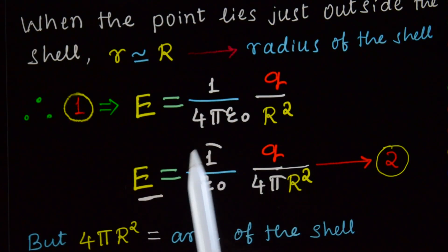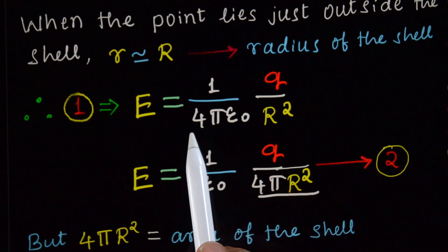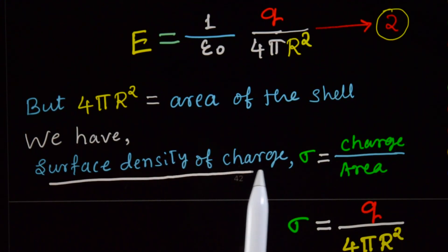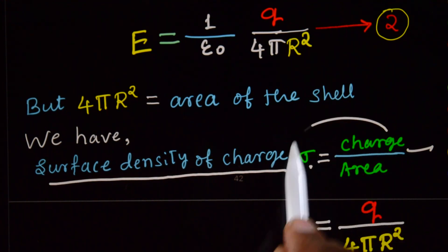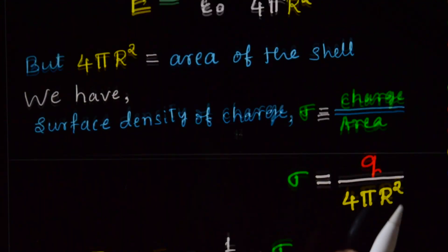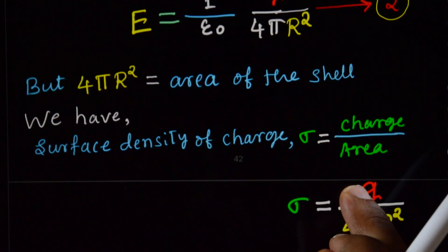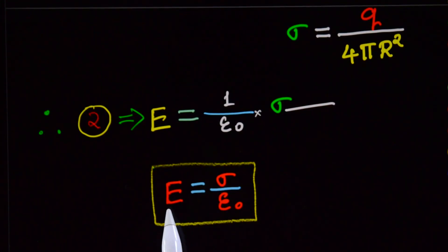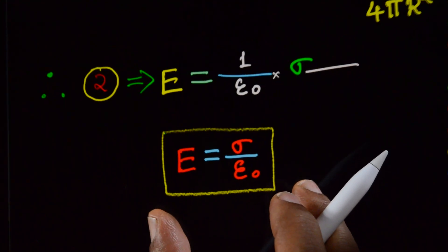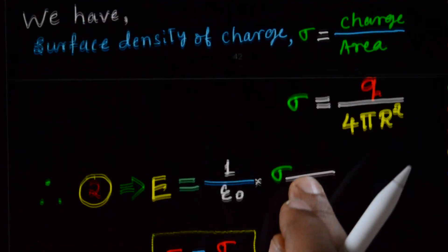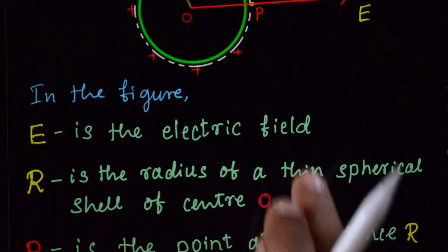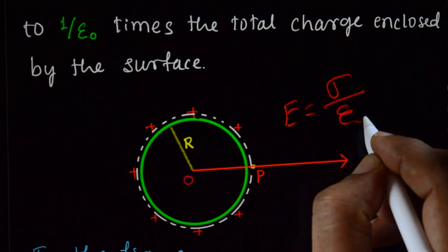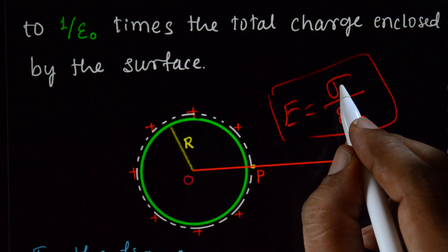We can rewrite E as 1 by epsilon naught times 4πQ divided by 4πR². Since 4πR² is the surface area of the shell, and surface charge density sigma equals charge divided by area, that is sigma equals Q divided by 4πR², we can write E equals 1 by epsilon naught times sigma. Therefore, E equals sigma divided by epsilon naught. This is the electric field just outside the spherical shell.